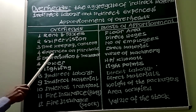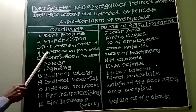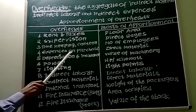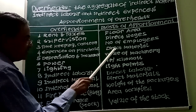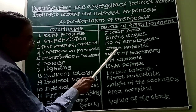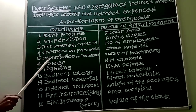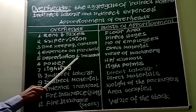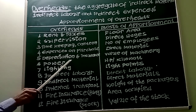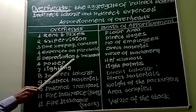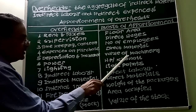Fourth item is expenses on purchases, which can be apportioned on the basis of direct material.